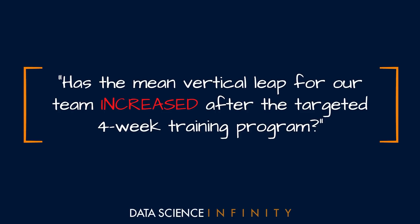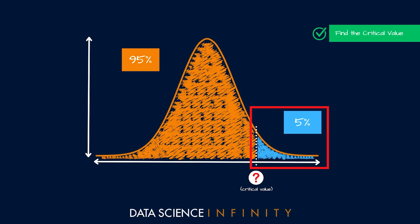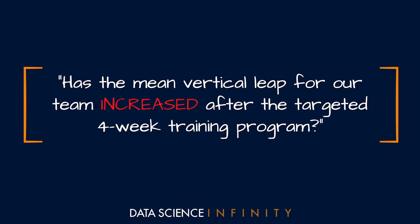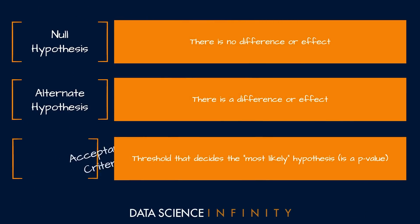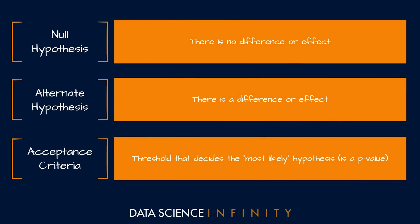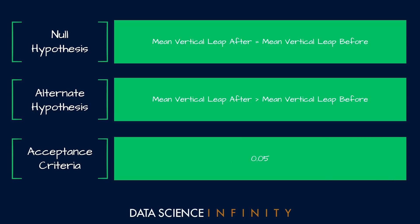Based on this question which contains a specific direction of interest, we will be applying a one-tailed test. As we always must do before we run any numbers, let's specify our null hypothesis, alternate hypothesis, and acceptance criteria. Our null hypothesis is that the mean vertical leap for our team after the training program will be equal to what it was before. Our alternate hypothesis is that the mean vertical leap for our team after the program is indeed higher than it was before. For our acceptance criteria let's use the commonly used value of 0.05. This acceptance criteria value will act as a line in the sand around which we make our conclusion about which hypothesis is more likely.